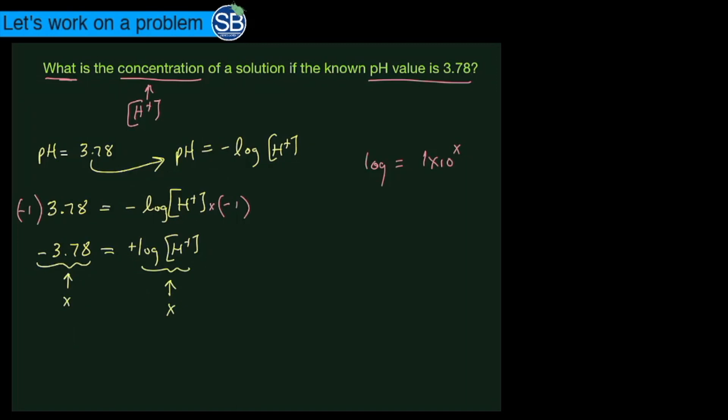We get 1 times 10 to the value of x, which is 3.78 in the negative fashion, and this is going to be equal to 1 times 10 to the value of log to the hydrogen ion concentration. What happens now - on the left-hand side that stays the way it is because that's the way we want it.